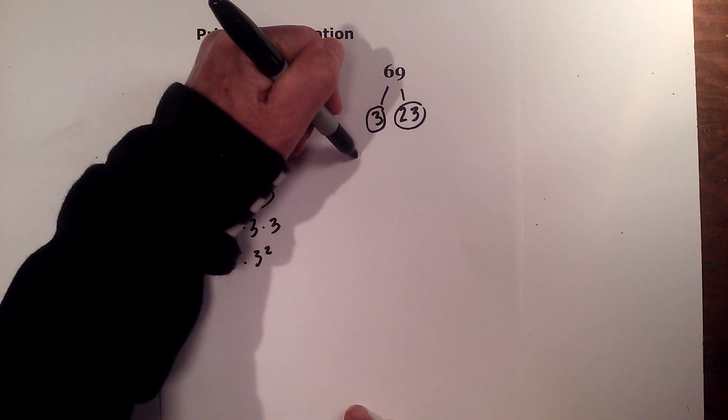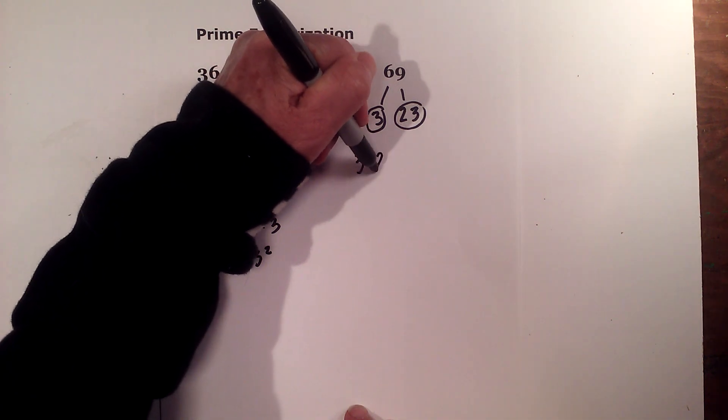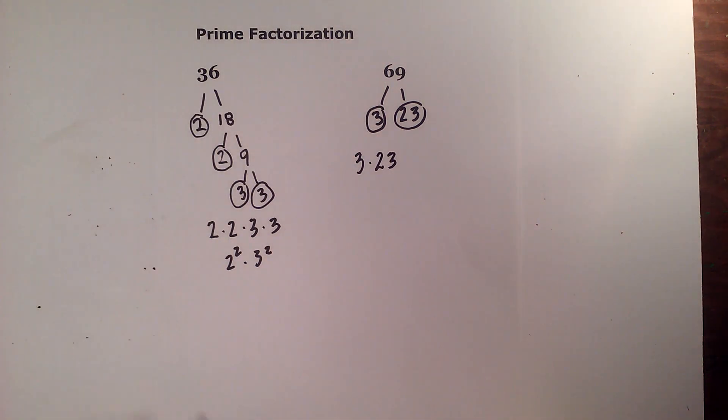So the prime factorization of 69 is 3 times 23. I hope this helps. Thanks for watching. MooMooMath uploads a new math or science video every day. Please subscribe and share.